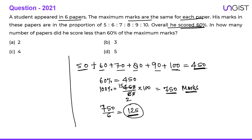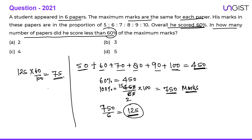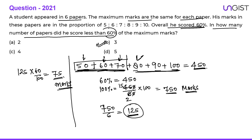The question asks: in how many papers did he score less than 60% of the maximum marks? 60% of 125 = 75. His assumed scores were 50, 60, 70, 80, 90, 100. Scores less than 75 are 50, 60, and 70 — that is three papers. So the answer is 3 papers.